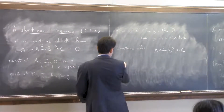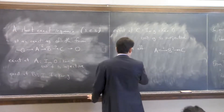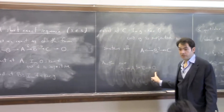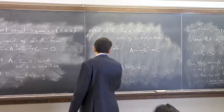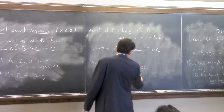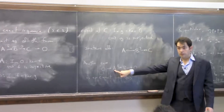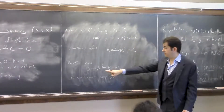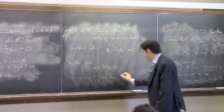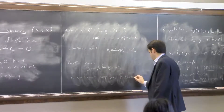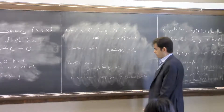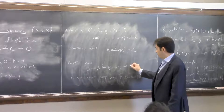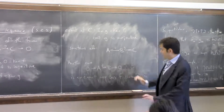Another case: a sequence 0 → A → B → 0 being exact means F is both injective and surjective, i.e., F is an isomorphism. That would not be called a short exact sequence unless you add the zeros. As an example of a short exact sequence, B could be the direct sum of A and C, with F the inclusion and G the projection.